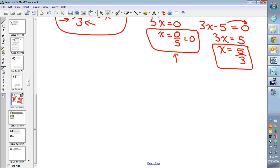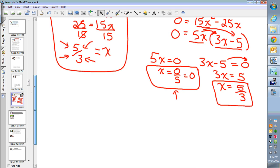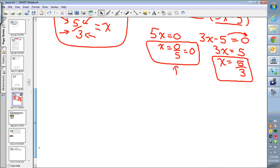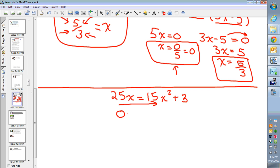Okay, so what if instead the question had a plus 3 on it? So what if it was 25x equals 15x squared plus 3? What do you do then? Well, let's see what happens. 25x equals 15x squared plus 3. We'll still take everything to that side. 0 is 15x squared minus 25x plus 3.